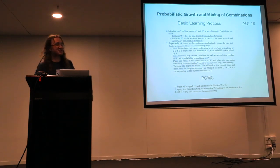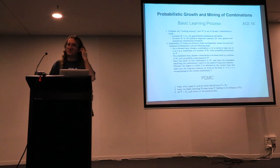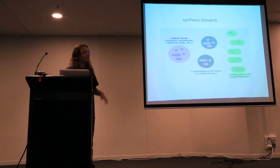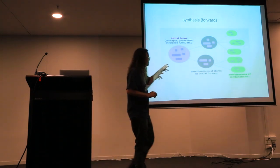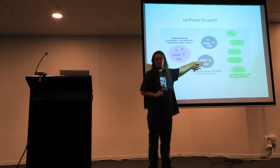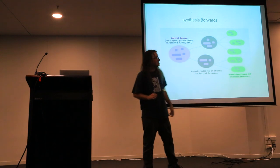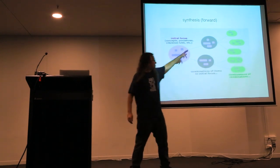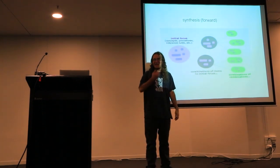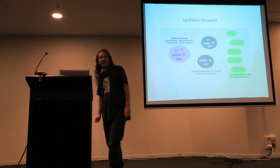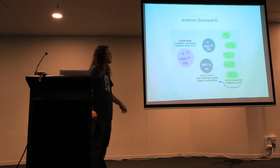You also have analysis, which is the dual — a backward process. You start with something you want and figure out how you could build it, then how you could build those things, and so on — that's the reverse of the forward growth process. Backward chaining inference is like that in a logic engine, and you could view backpropagation in neural nets this way too. In a paper from AGI 2016 called 'Probabilistic Growth and Mining of Combinations,' I tried to formalize a probabilistic process based on these ideas.